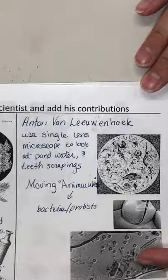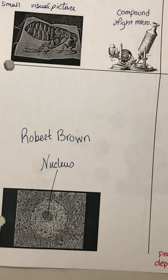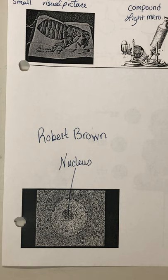Then we talked about Robert Brown. Robert Brown was another scientist of the day who named the nucleus. He saw the center — there was a dark dot in the center of almost every single cell — and 'nucleus' means the center mass.